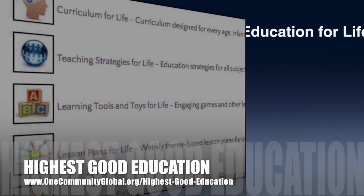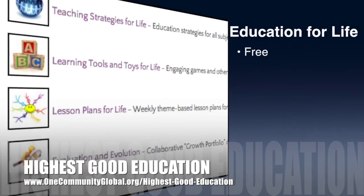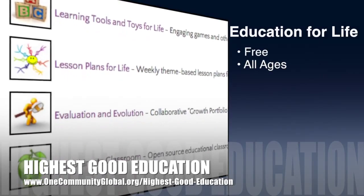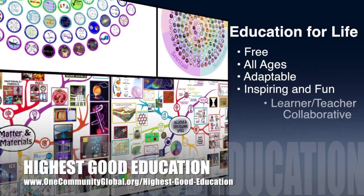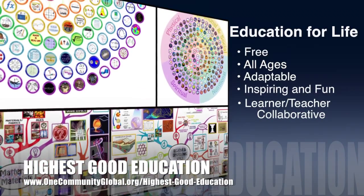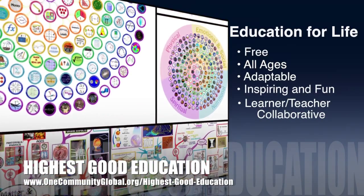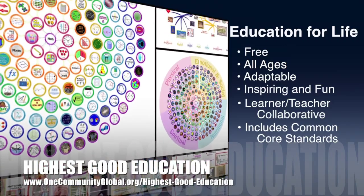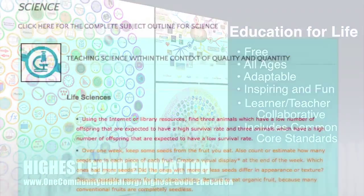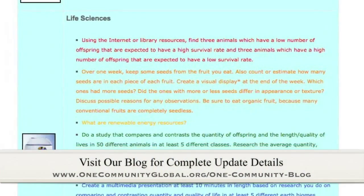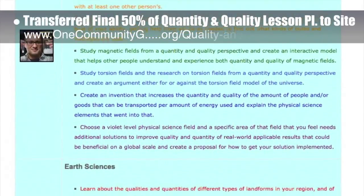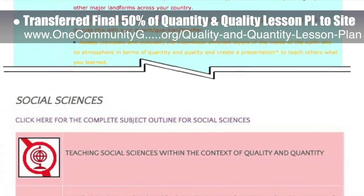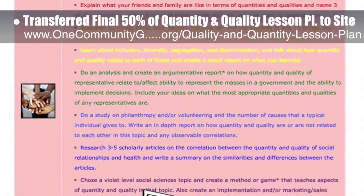One Community's approach to highest good education is open source and free shared, designed for all age groups, adaptable to any schooling environment, inspiring and fun for all participants, a learner-teacher collaborative, and it includes U.S. Common Core standards. This week the core team — which includes the Pioneer members plus those helping who don't wish to be individually acknowledged — transferred the final 50% of the content for the quantity and quality lesson plan to the website. You can see this work here.